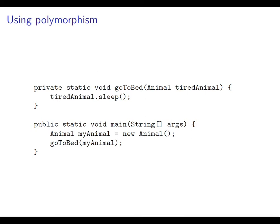Now let's see a bit about how we can use polymorphism in object orientation. Here is a piece of code: we've got a go-to-bed method which takes an animal and sends that animal the sleep message. Here we're going to invoke that method by first creating an animal object and then passing it to the go-to-bed method.